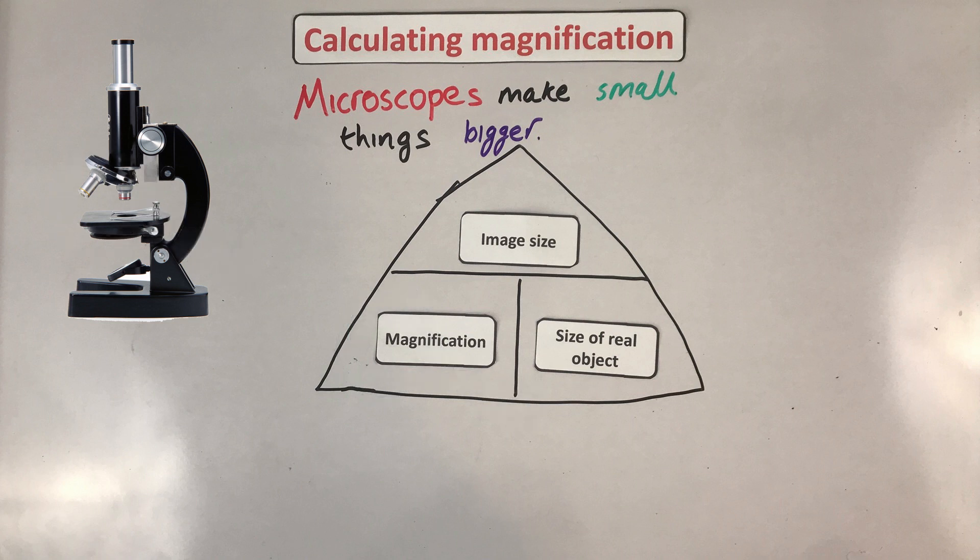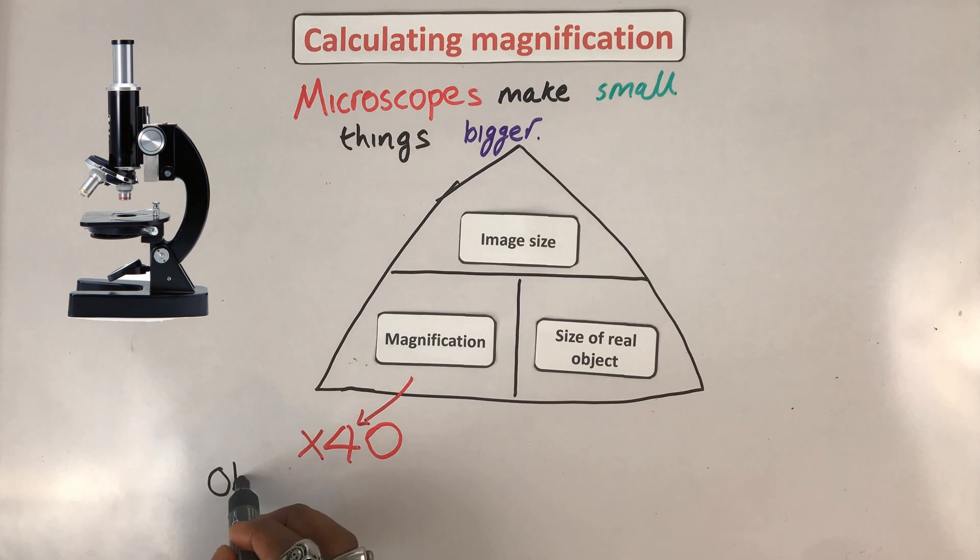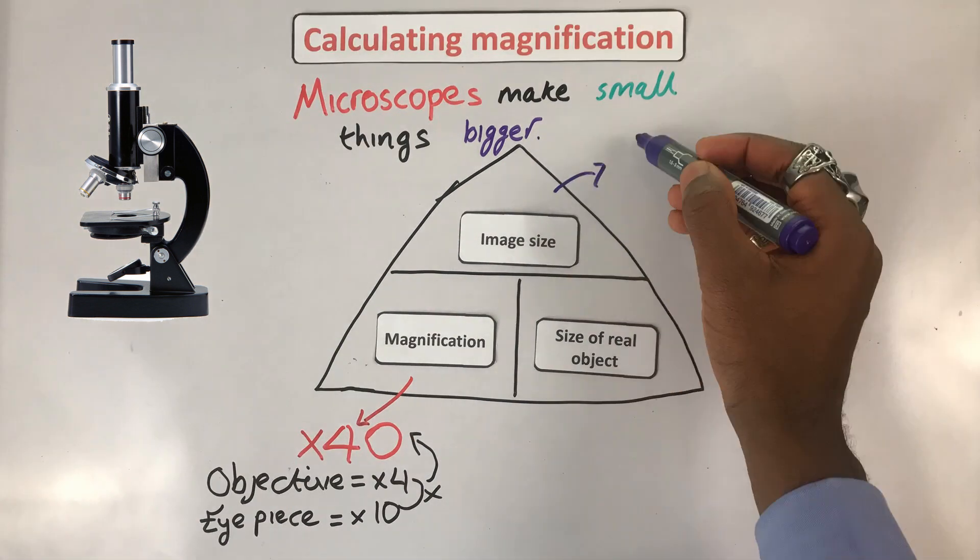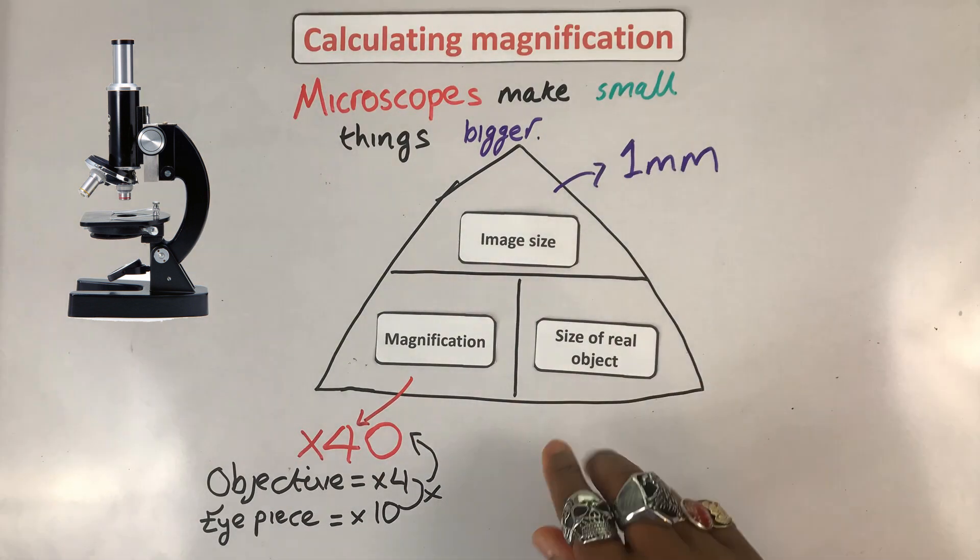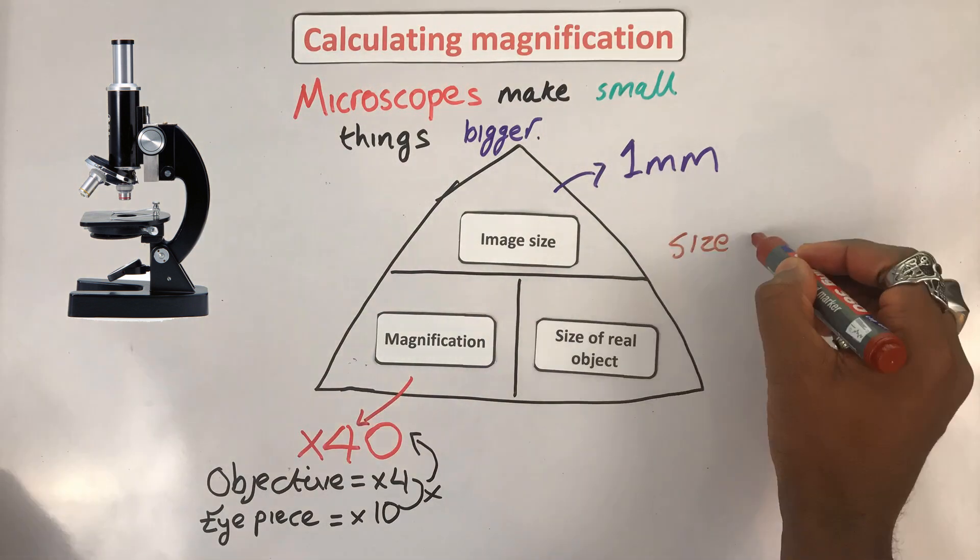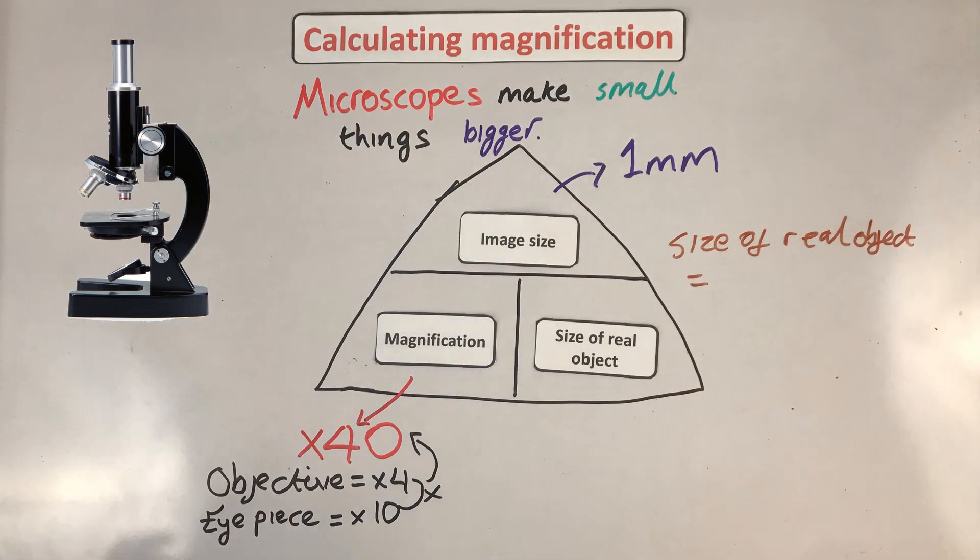But that's not all. You have to be able to rearrange this equation as well. Check this example. Your total magnification is ×40 because you're using a ×4 objective lens and your eyepiece lens is ×10. The image of the object you see is one millimeter. You need to work out the real size. So from my equation triangle, when I cover real size, I see that what I need to do is my image size divided by my magnification. And when I do that, that gives me 0.025 millimeters.